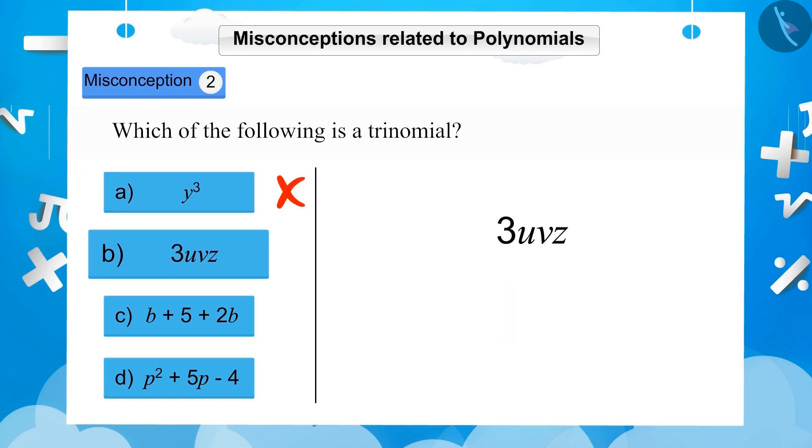b, 3uvz. This option has a single term. This too is not a trinomial. Hence, this is not the correct option.